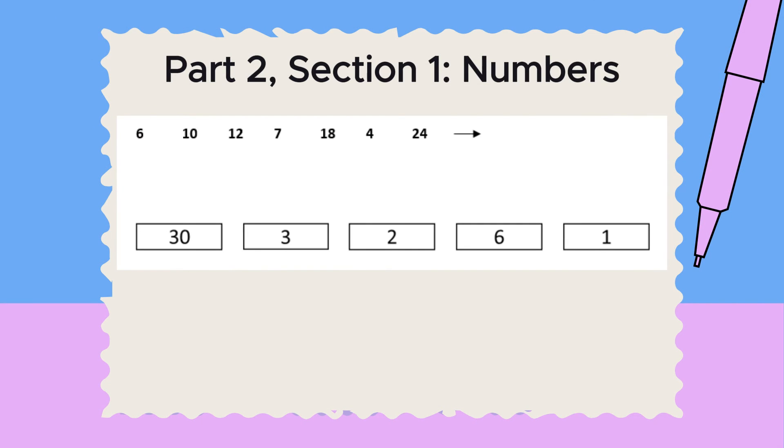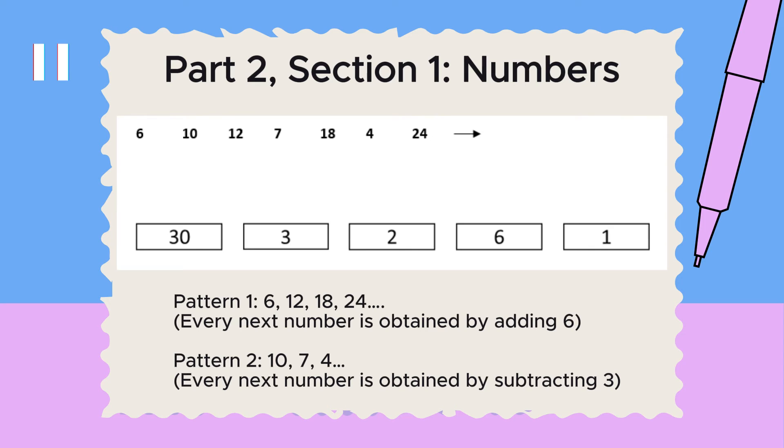Moving on to the next test section, which is called numbers. Each of these questions shows a series of numbers. You need to work out the rule or rules used to arrange the numbers, then select the answer choice that shows the next number in the series. In this series, two patterns alternate between each other. The last digit in the series belongs to pattern one, and the next number will be from pattern two. Therefore, the next number will be four minus three, which equals one, and this is the correct answer.